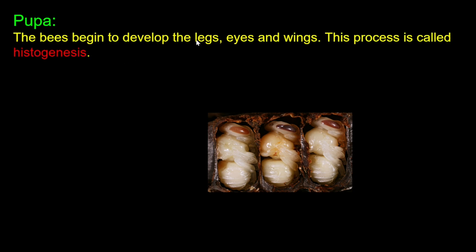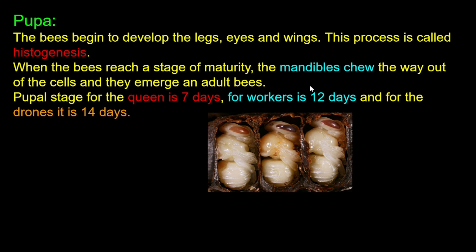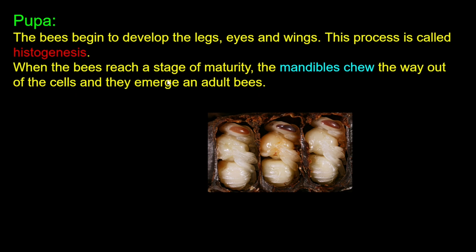Inside the sealed cell, the bees begin to develop legs, eyes, and wings. This process is called histogenesis. When the bees reach a stage of maturity, the mandibles chew their way out of the cells and they emerge as adult bees.